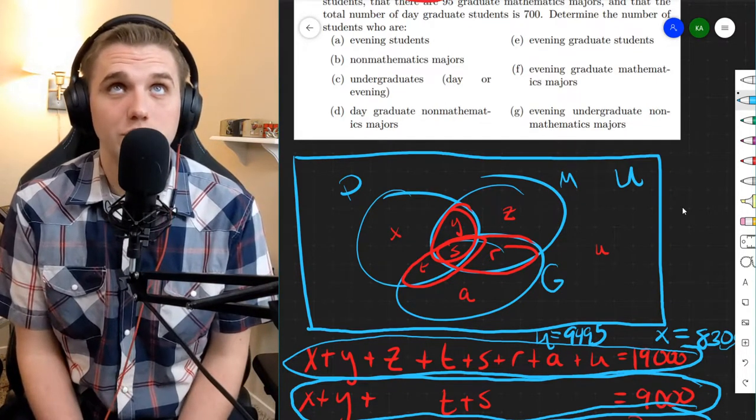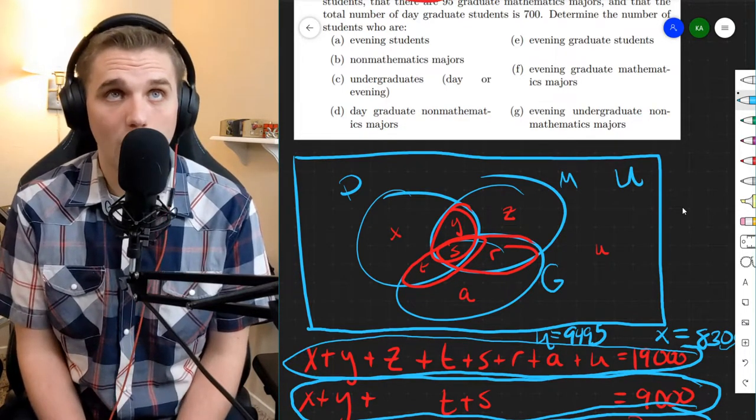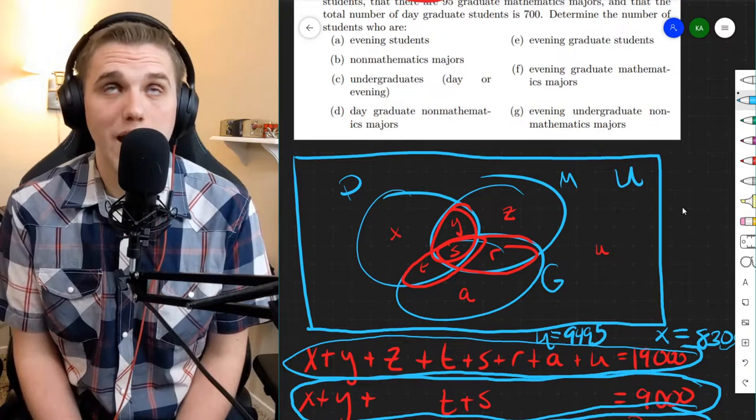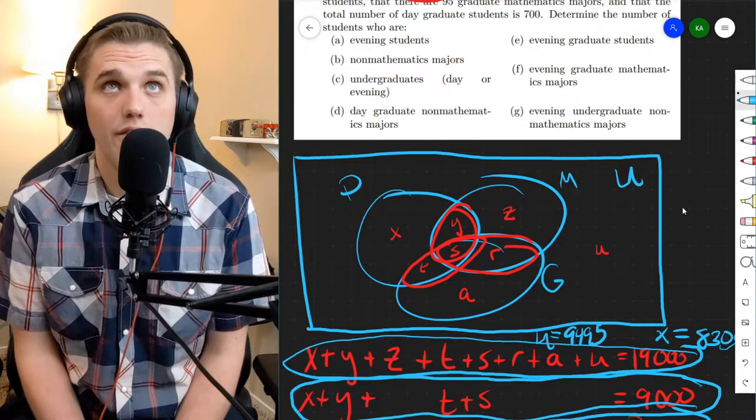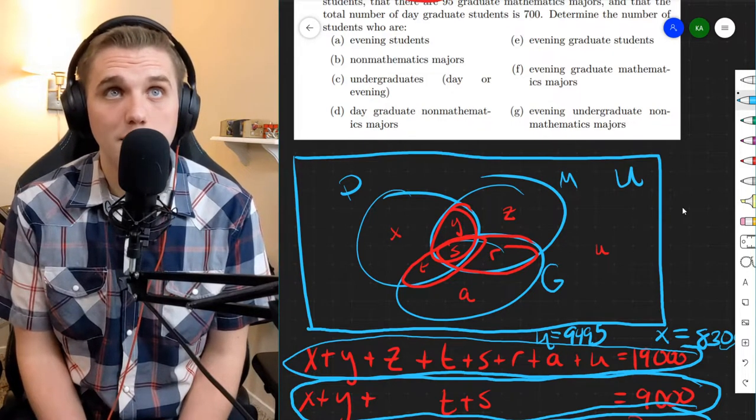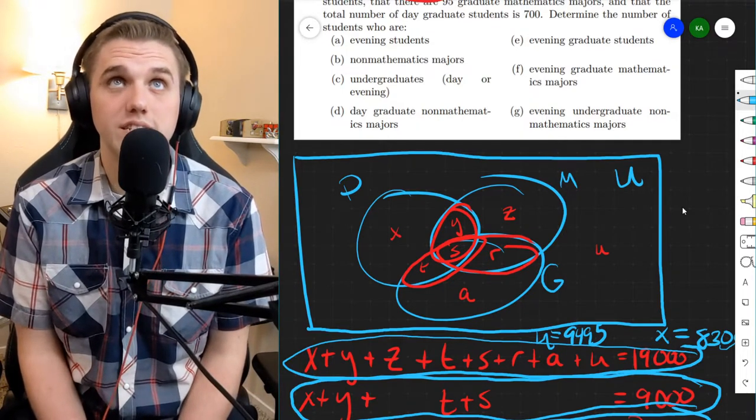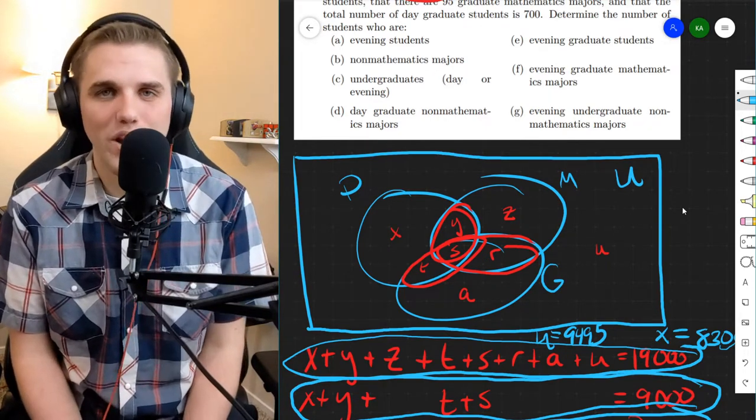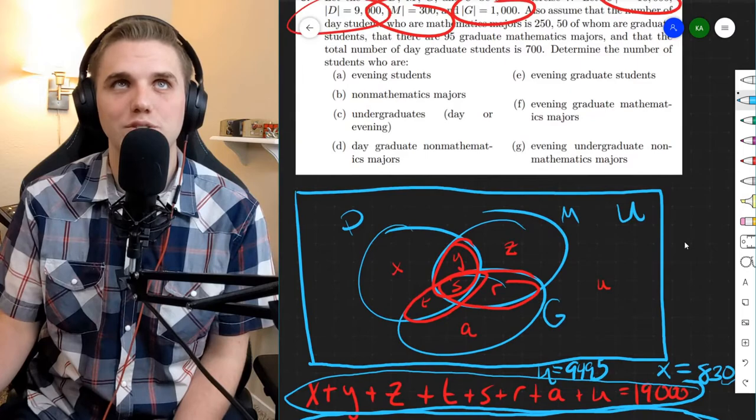Part E, evening graduate students. So these are graduate students who are not day students, which is A and R. That's it, just A and R. And then F, evening graduate mathematics majors. So outside of day, because it's evening. And then they're also graduate math majors. So it has to be in M and in G. So that's either S and R, but it can't be S because S is in D, which is a day. It has to be an evening. So R, F is R. So whatever R is, that's the answer. I think R was like 45, was it? So there you go, 45 is the answer to part F.